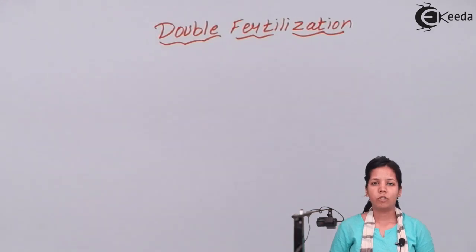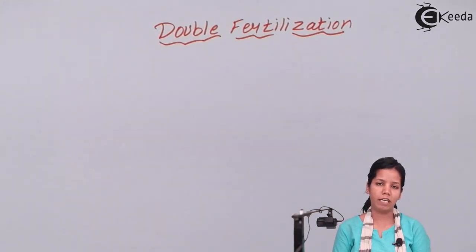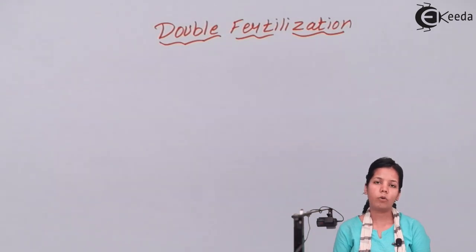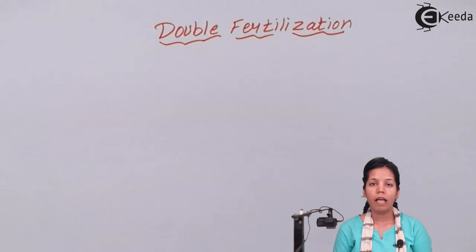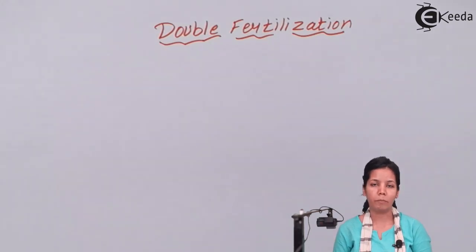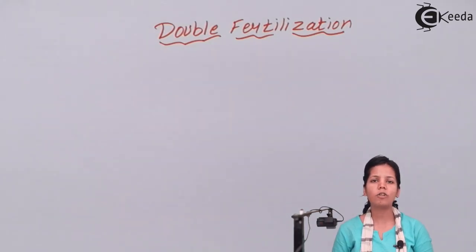Double fertilization. In the normal definition of fertilization, we say that the pollen grains, or the male gamete, meets the egg female gamete, and their fusion results in the formation of the zygote and the seed. This is the normal definition of fertilization.